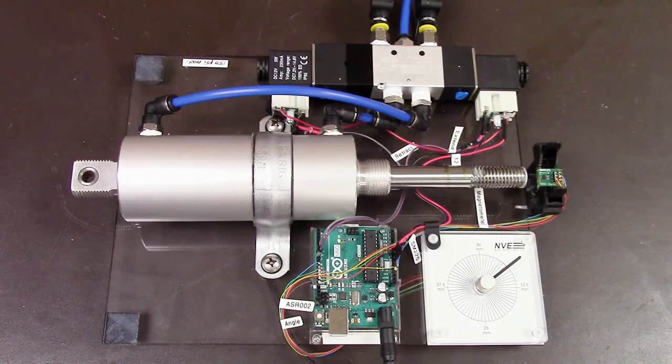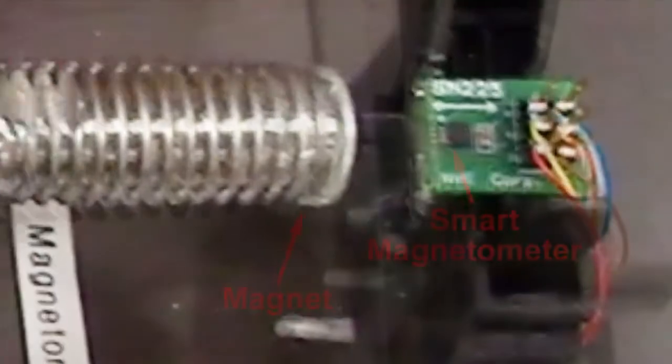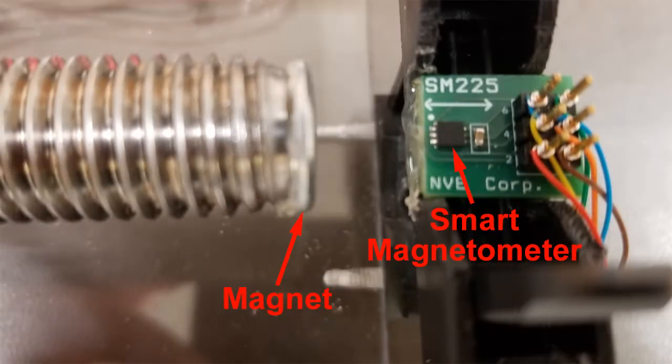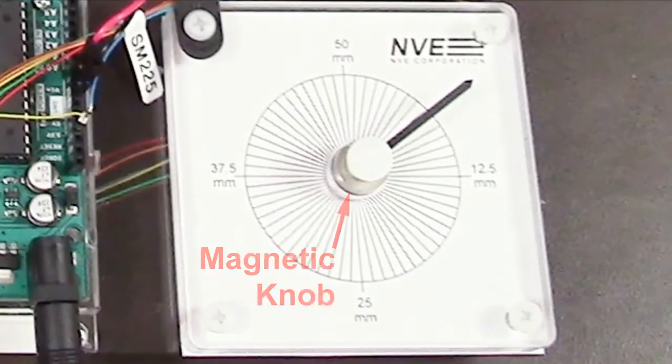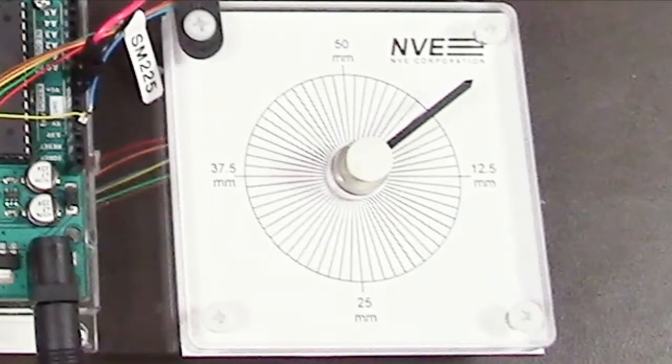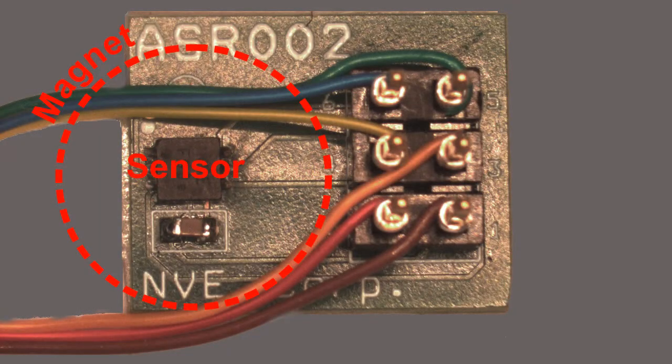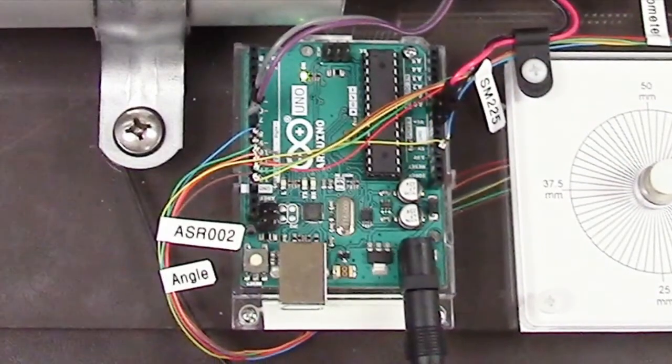Hello, we're demonstrating an on-off servo control system using a smart magnetometer with a magnet on the actuator, a smart angle sensor underneath the magnetic knob, and an Arduino board.